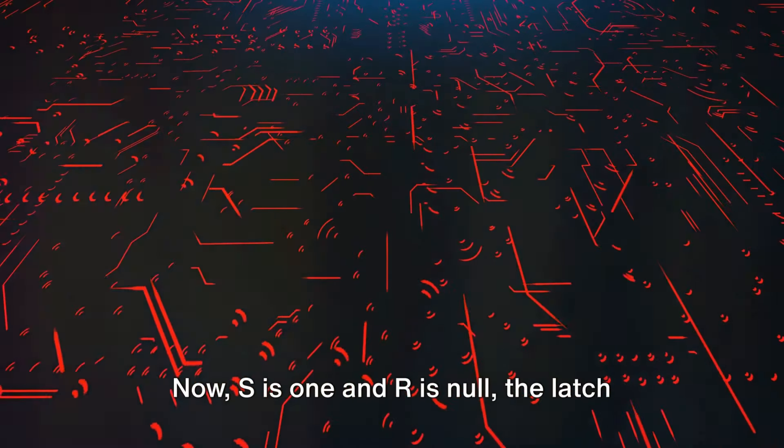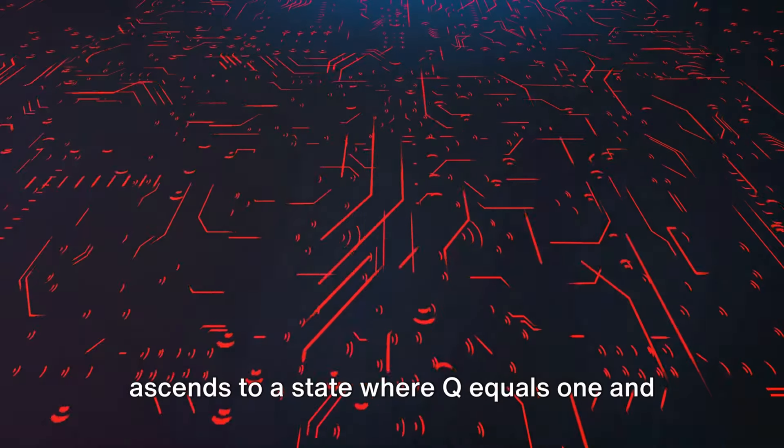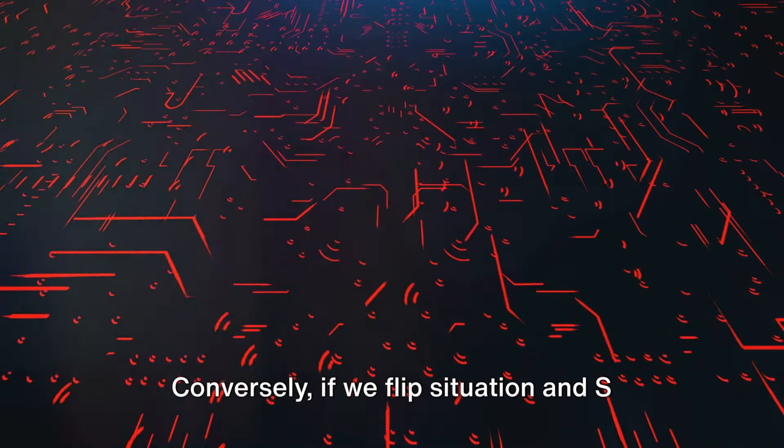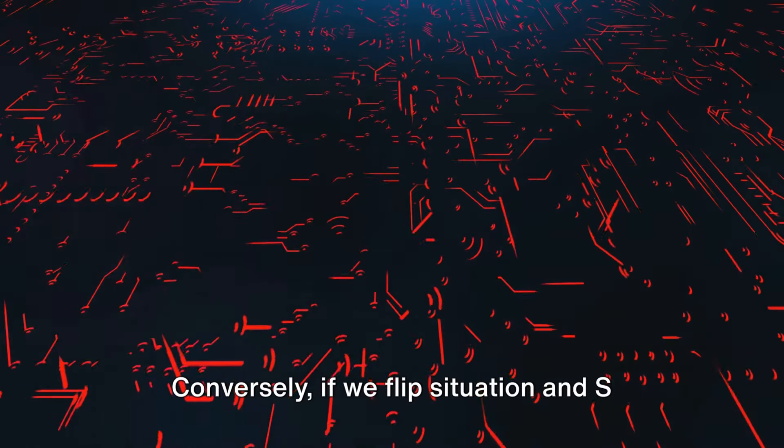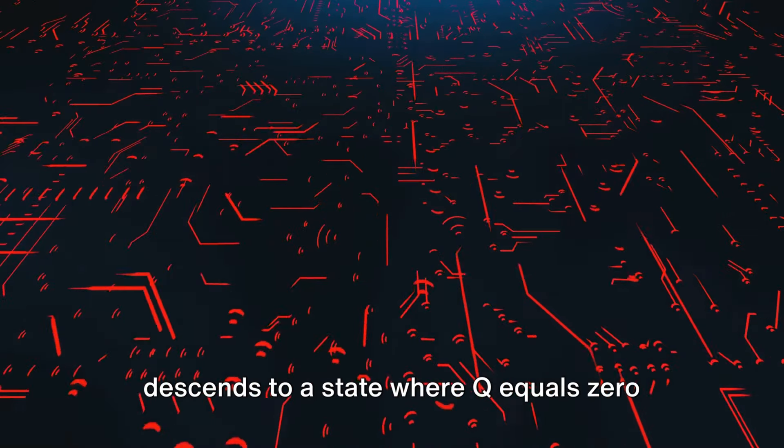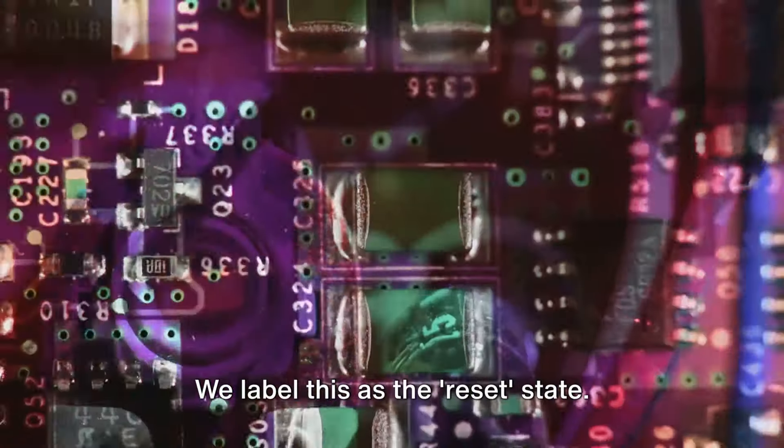Now, when S is one and R is null, the latch ascends to a state where Q equals one and Q' equals zero. This is termed as the Set state. Conversely, if we flip situation and S equals zero while R equals one, the latch descends to a state where Q equals zero and Q' equals one. We label this as the Reset state.